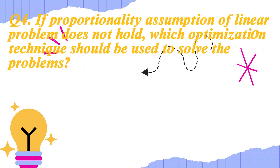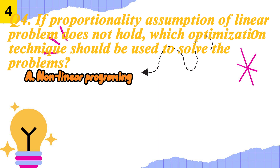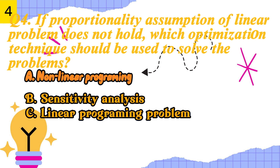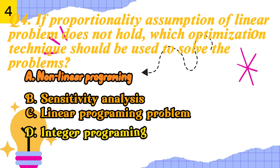Q4. If the proportionality assumption of a linear problem does not hold, which optimization technique should be used to solve the problems? A. Non-linear programming. B. Sensitivity analysis. C. Linear programming problem. D. Integer programming.